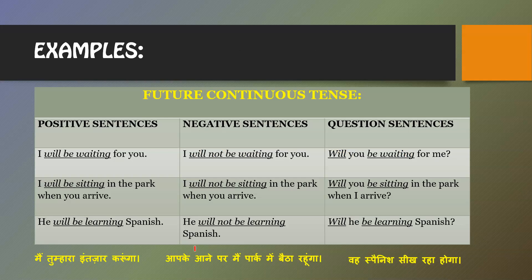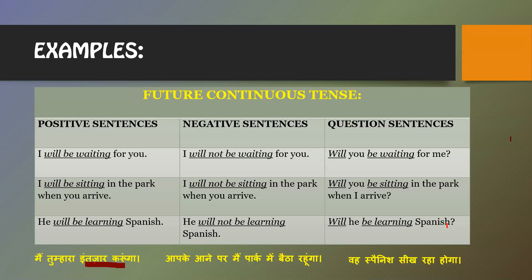Examples of future continuous tense: Positive — 'I will be waiting for you.' Negative — 'I will not be waiting for you.' Question — 'Will you be waiting for me?' Also: 'He will be learning Spanish' (positive), 'He will not be learning Spanish' (negative), 'Will he be learning Spanish?' (question).